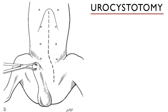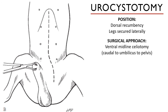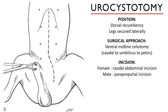The dog is positioned in dorsal recumbency with the hind legs secured laterally. The placement of the incision varies between female and male dogs. For females, the incision is made on the caudal abdomen from the umbilicus to the pelvis.